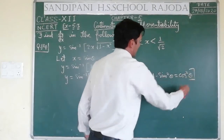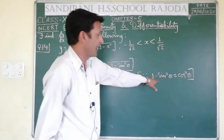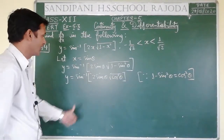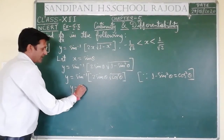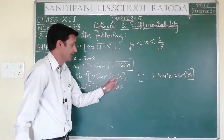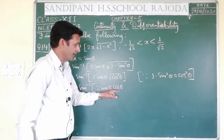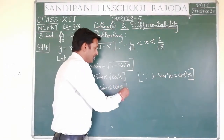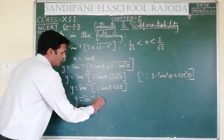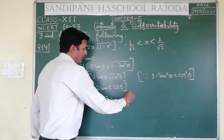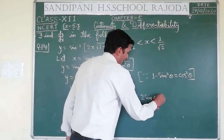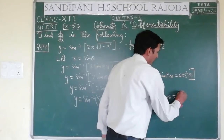क्या हमने 1 - sin²θ को cos²θ consider किया? हाँ — यह applied formula है। तो 1 - sin²θ = cos²θ लिखा, फिर cos²θ root से बाहर आएगा तो वो cos θ हो जाएगा। Then it will be y = sin⁻¹(2 sin θ cos θ), क्योंकि यह square है — root से बाहर आएगा तो square eliminate हो जाएगा। 2 sin θ cos θ जो है यह sin 2θ का formula होता है, तो y = sin⁻¹(sin 2θ).